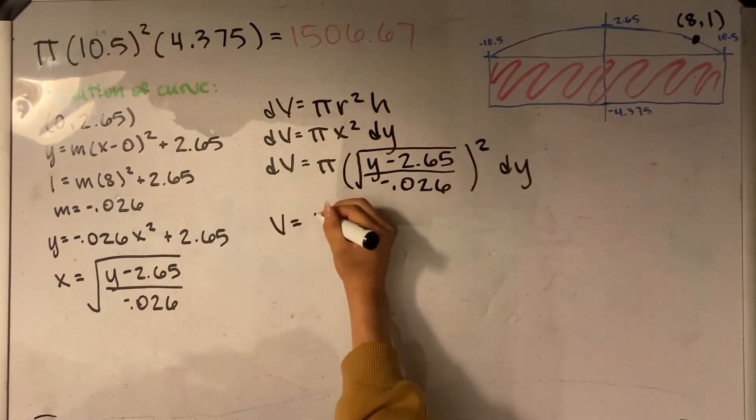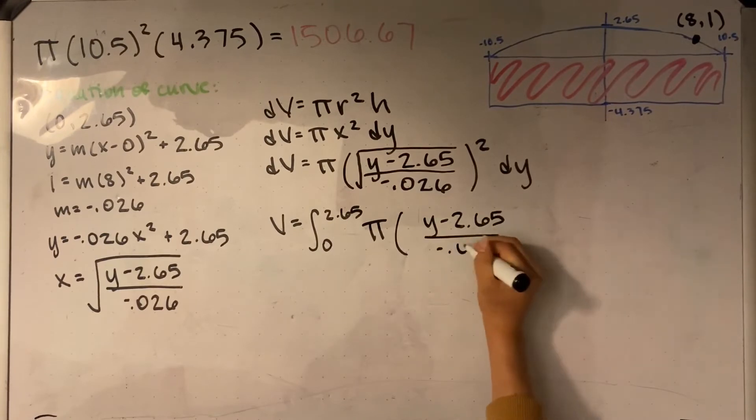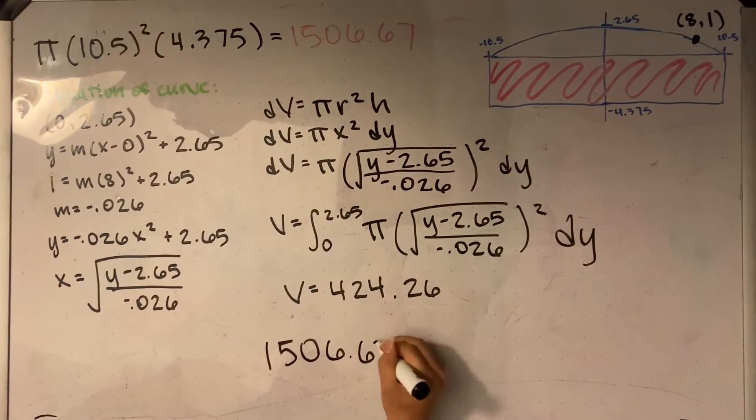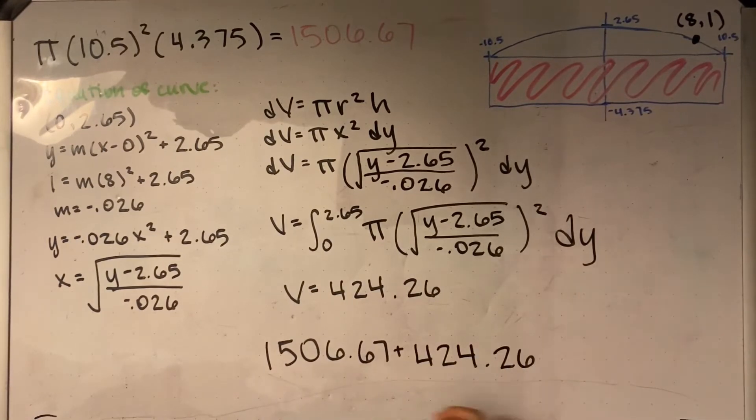We can then find volume by integrating both sides from y values 0 to 2.65. This equals 424.26 cm3, and added to 1506.67 is 1930.93 cm3 of cake in total.